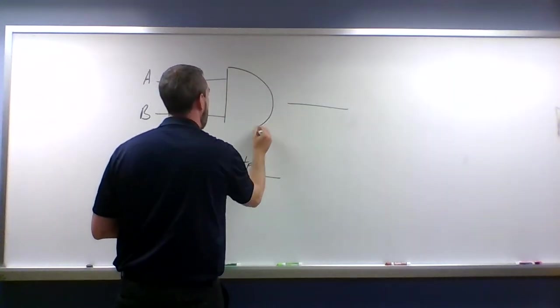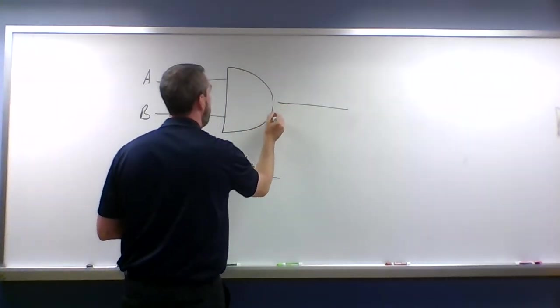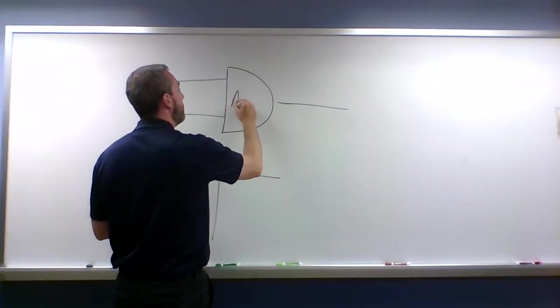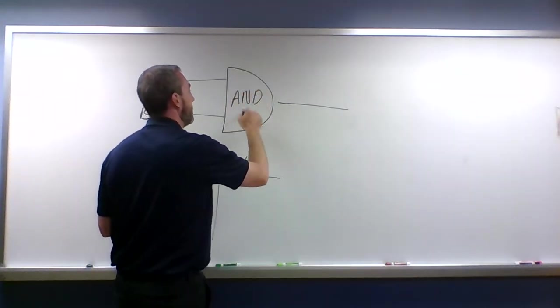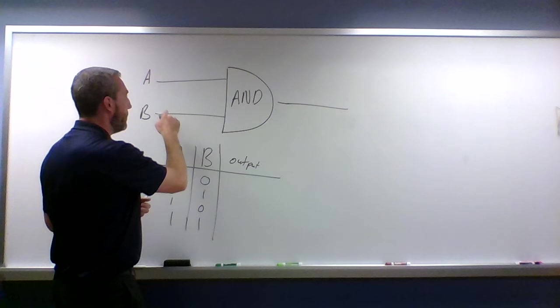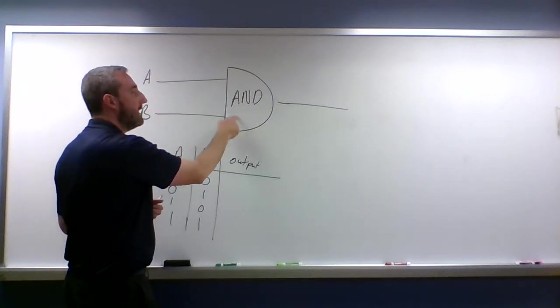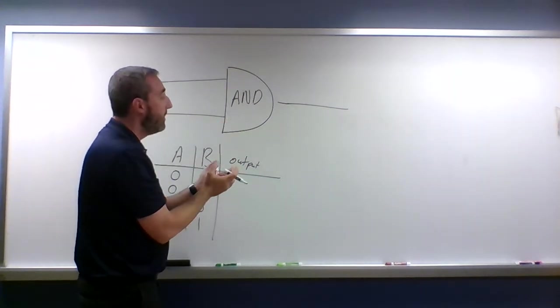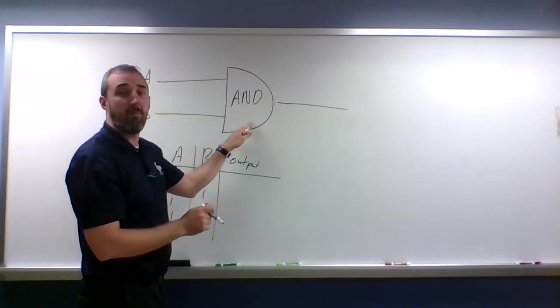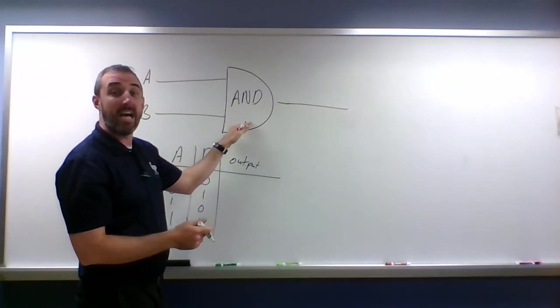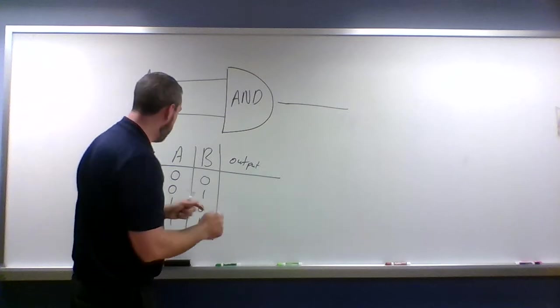Instead of having this mystery box the way I have it drawn now, I'm going to draw a symbol that represents a particular type of logic gate. This is called an AND gate, so it looks like a big capital D. I have two inputs going into this little system of transistors, and this gate is going to tell me when they're both on, when A and B are on.